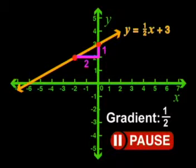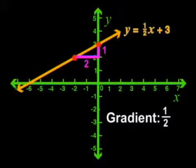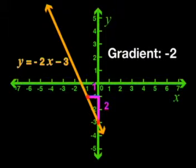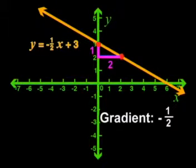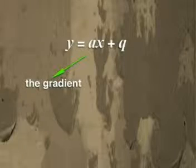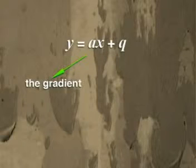Now have a look at these graphs again and see if you notice anything about the gradients. Hey, I can see what's going on over here. For each graph, the number in the formula is the same as the gradient we found. Well spotted there. That is a very useful observation. The a value, the coefficient of x in the formula y equals ax plus q, is always the gradient of the graph. It tells us about the steepness of the graph.